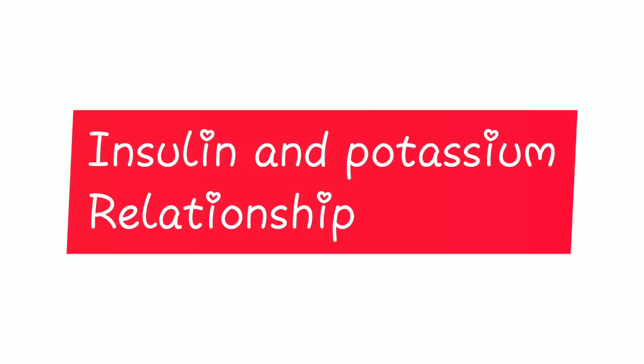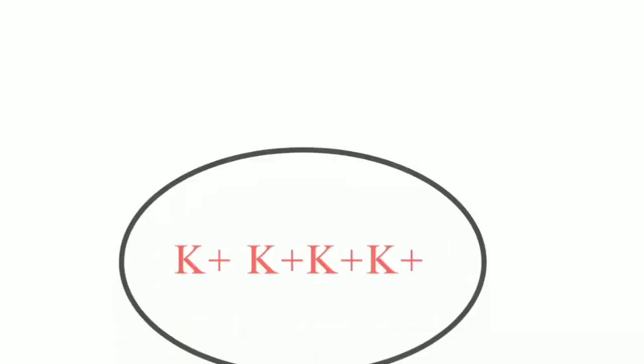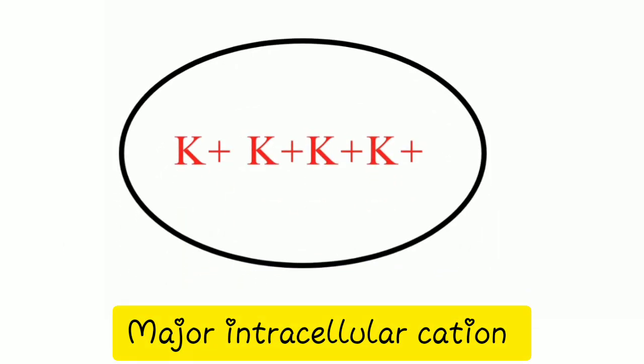Let's talk about the relationship between insulin and potassium ions. Potassium is a major intracellular cation, usually within the cell.